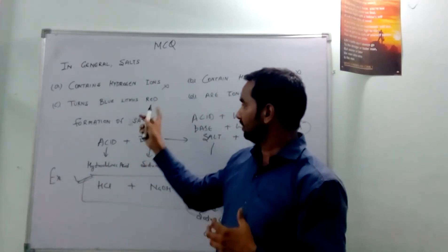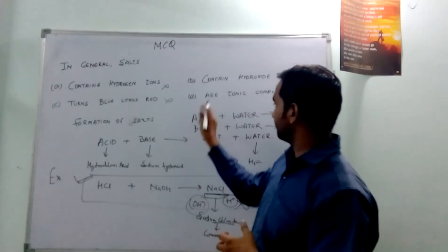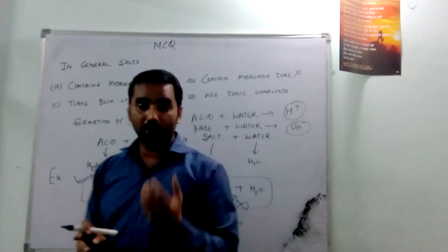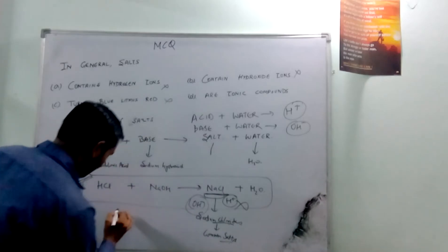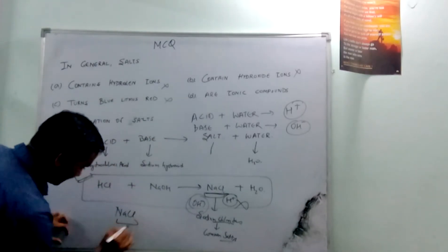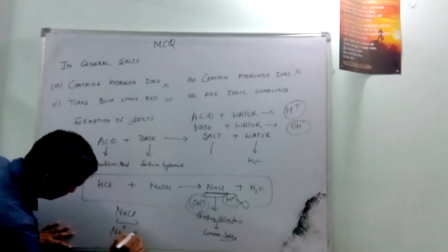It is only when acid and base are tested by this litmus test. Okay? So it is also incorrect. The fourth is salts are ionic compound. Yes! How? How?